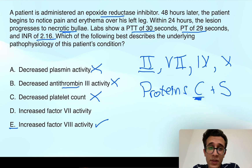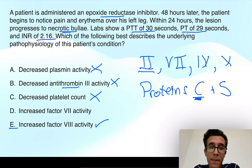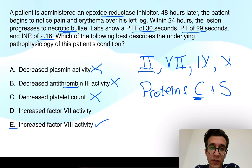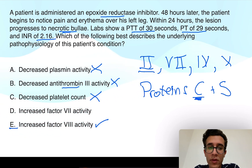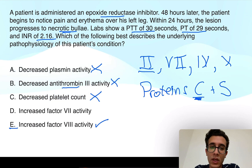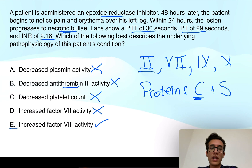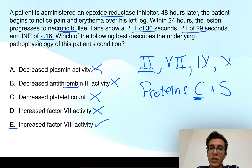Answer choice D: factor VII has the shortest half-life and gets depleted quickly because it's dependent on vitamin K activation through epoxide reductase — but all this leads to a decrease in factor VII activity, not an increase. Alright guys, that's it. I hope you found this video useful. Thank you for watching.